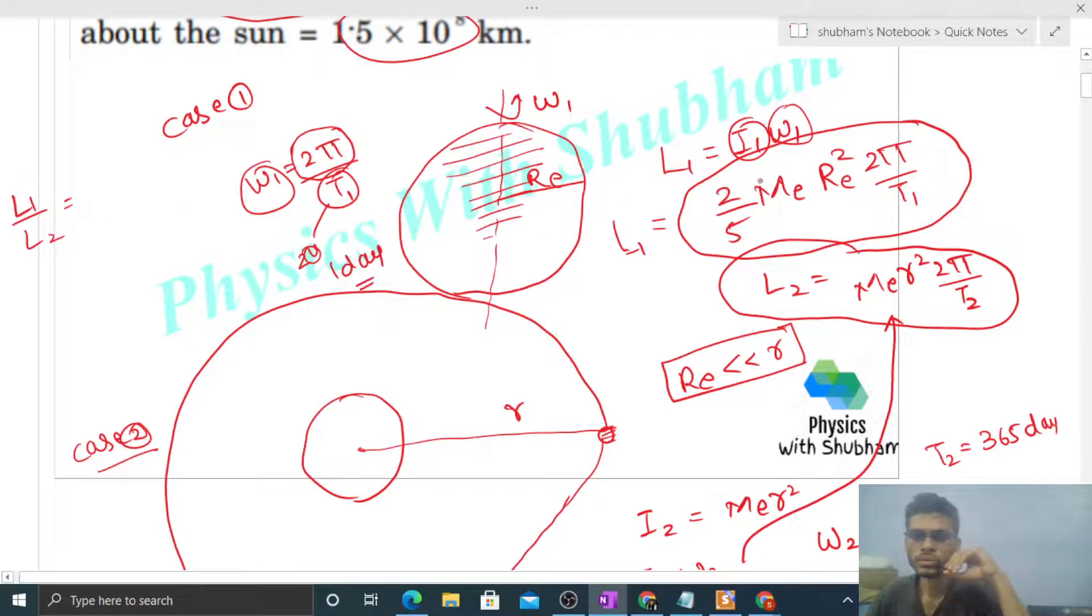Mass of Earth is common, so it cancels. So 2 by 5, and here radius of Earth square, here small R square. So Re upon small R, its square, and 2π cancels, so we get T2 by T1.